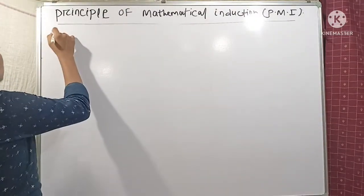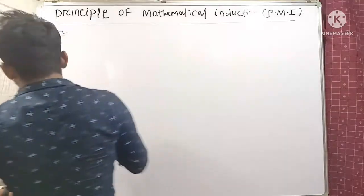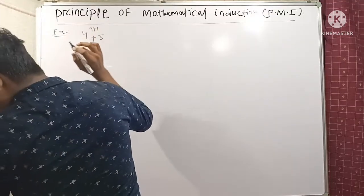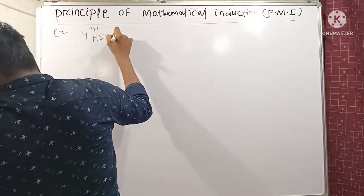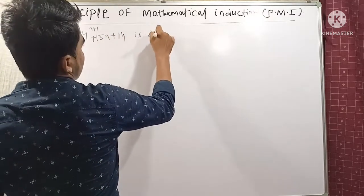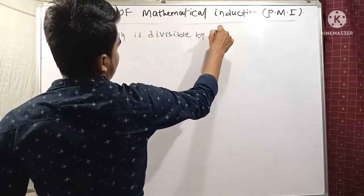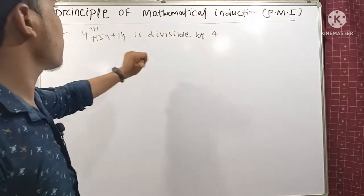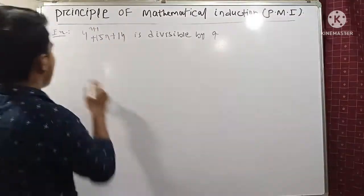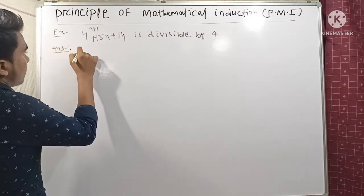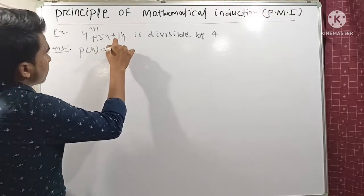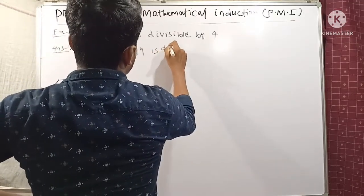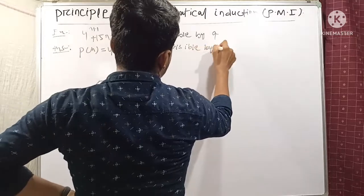Now the second question: Prove that 4^(n+1) + 15n + 14 is divisible by 9. This is the question. Let P(n) be the statement: 4^(n+1) + 15n + 14 is divisible by 9.